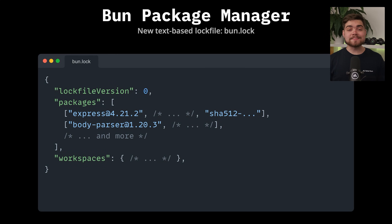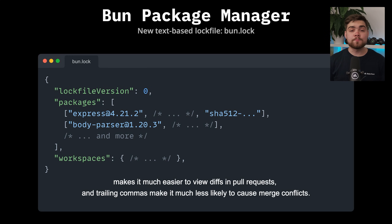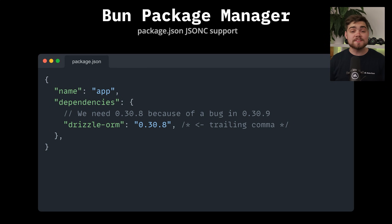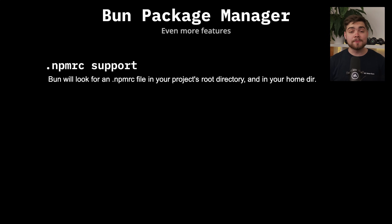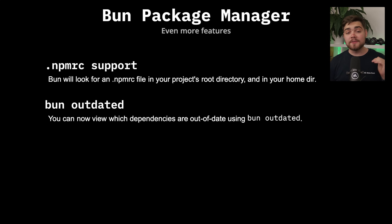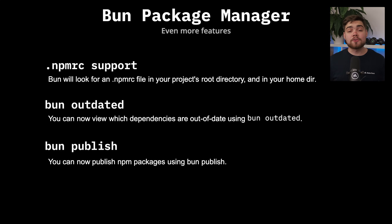For those who just use BUN as a package manager, this update brings major improvements. The headline feature is the new text-based lock file replacing the old binary one, solving pain points like being unable to view lock file changes on GitHub or resolve merge conflicts — and it's 30% faster than before. They've added JSONC support for package.json so you can add comments to explain pinned dependencies. There's full npm-rc support, a new BUN outdated command to check for package updates, the ability to publish packages directly to npm using BUN publish, and support for patching broken dependencies locally without forking them. Patches are stored as regular .patch files in your repo, making them easy to review and share.